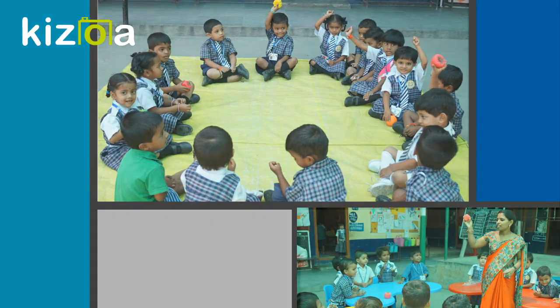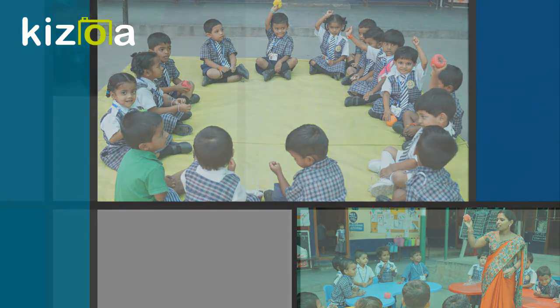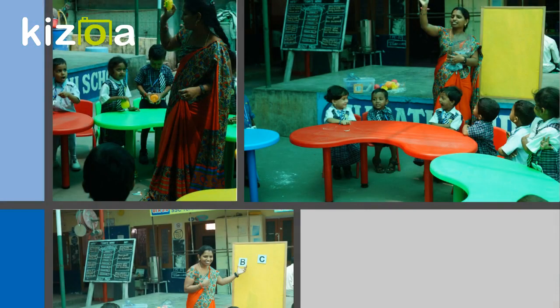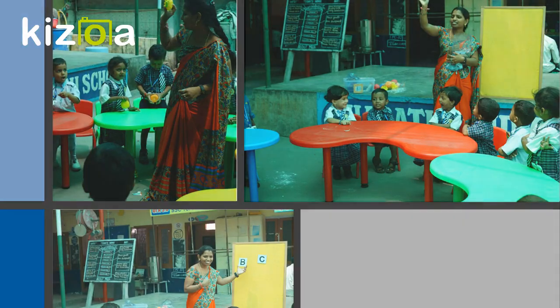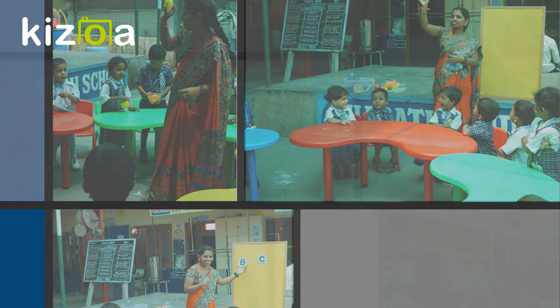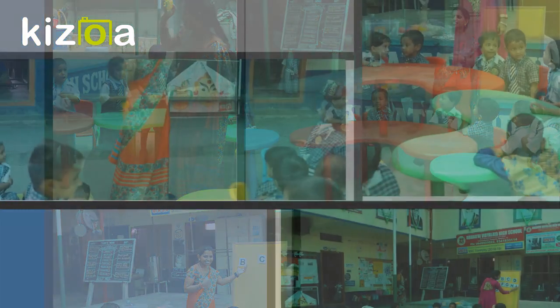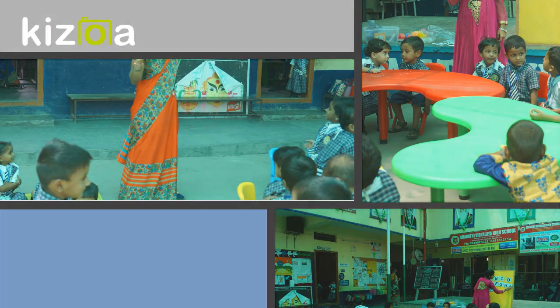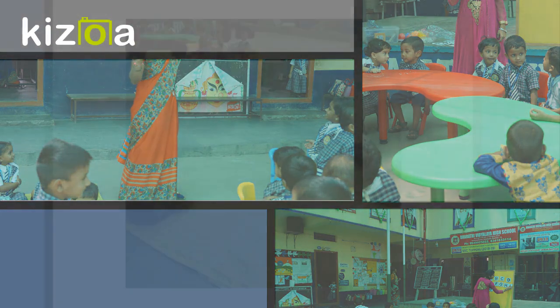M is for monkey, m-m-monkey. N is for nose, n-n-nose. O is for octopus, o-o-octopus. P is for pig, p-p-pig.